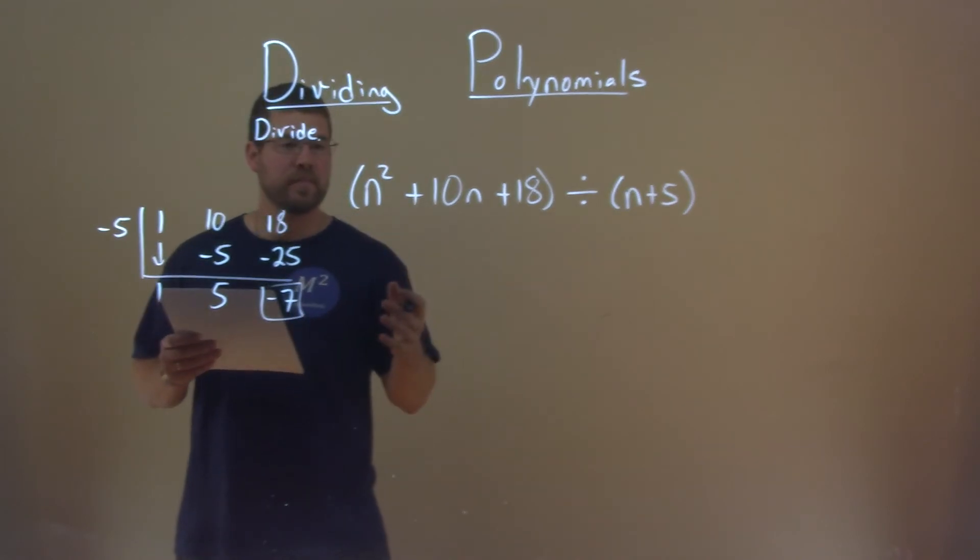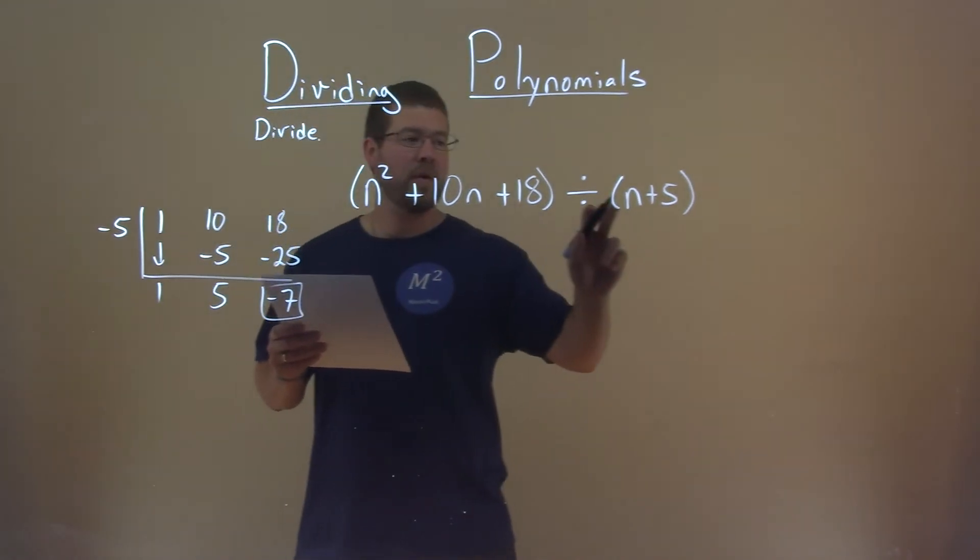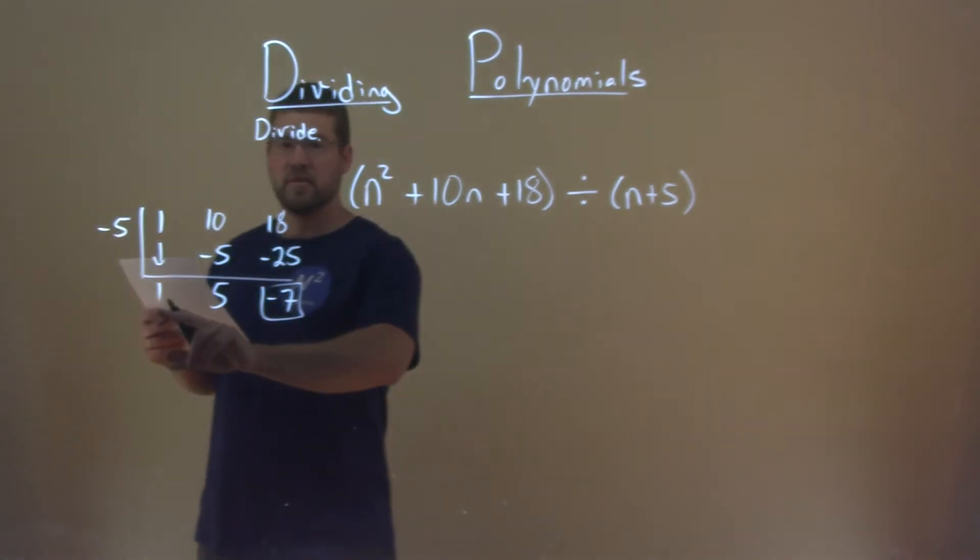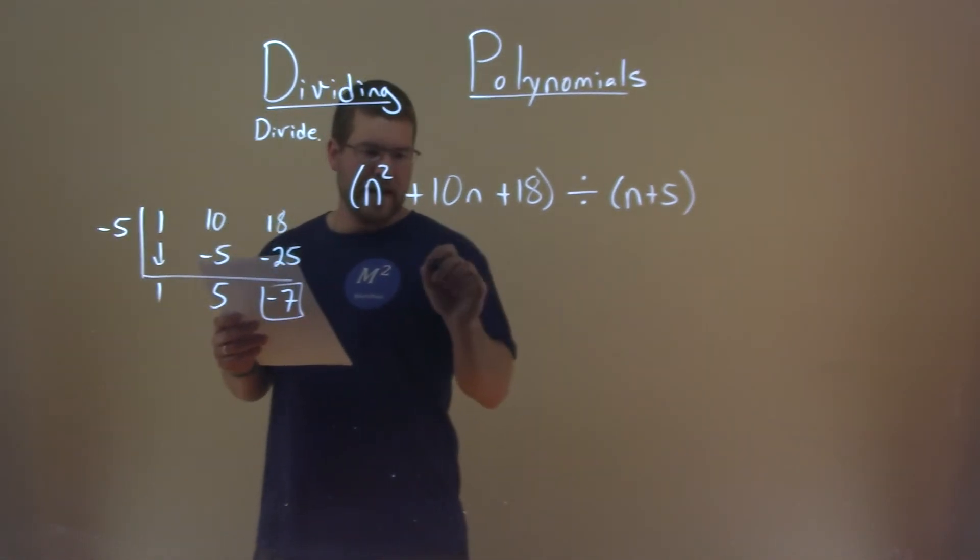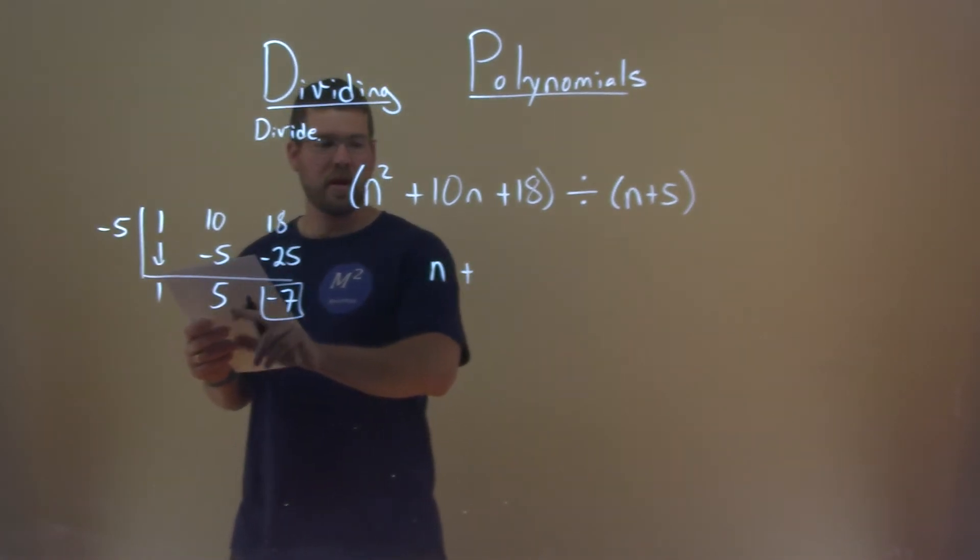So let's translate that to our answer. Well, n squared divided by 1 of the n's gives us the highest power of n to the first power, and that's where we start right here. So we have 1n, let's write the n, plus, going down the line, a 5,